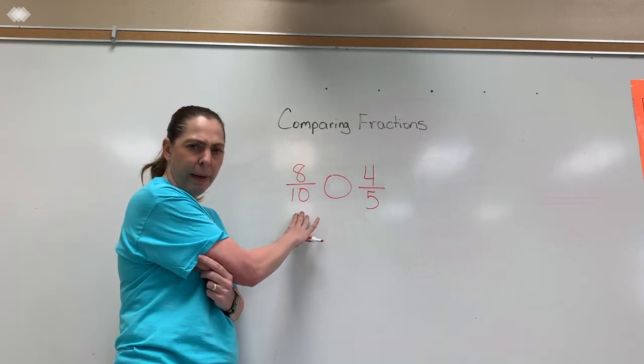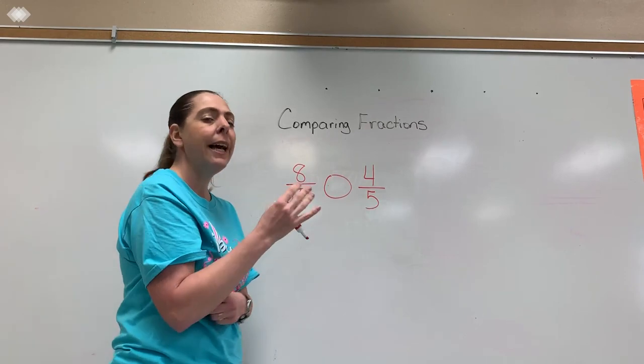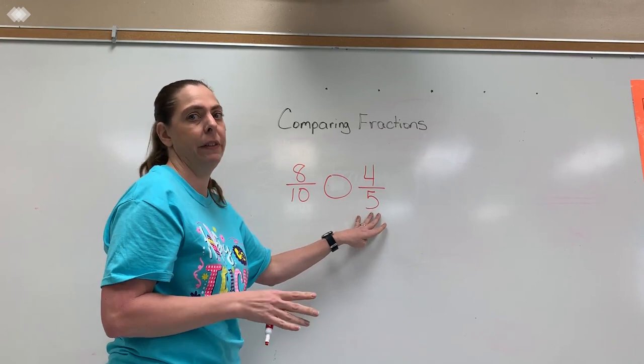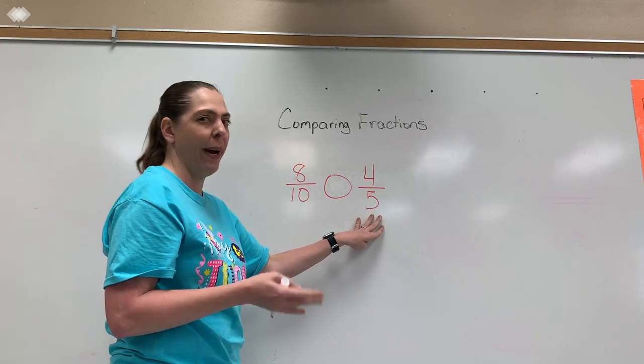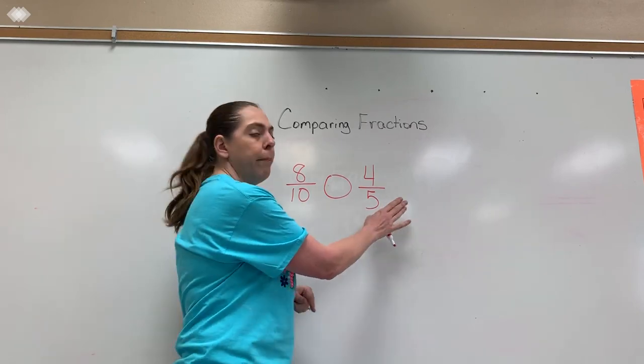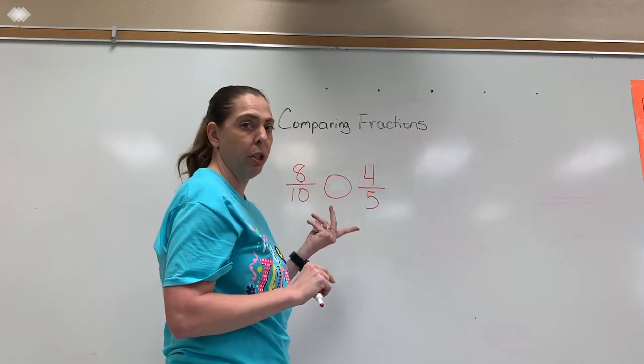I'm going to look here at my denominator. I have a 10 and I have a 5. I want to leave my larger denominator alone because I think I can make 5 into a 10 pretty easily. I know I can multiply 5 times 2 and that will give me 10. When I multiply 5 by 2, I also have to multiply the numerator by 2 as well.